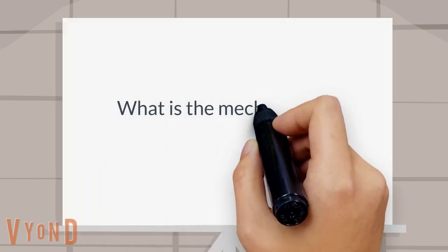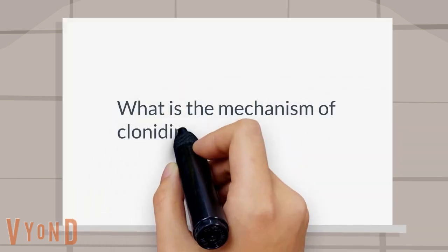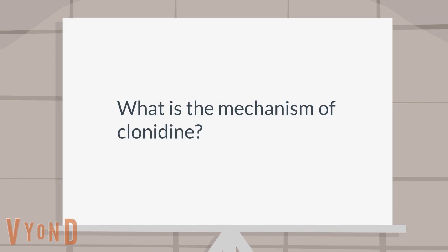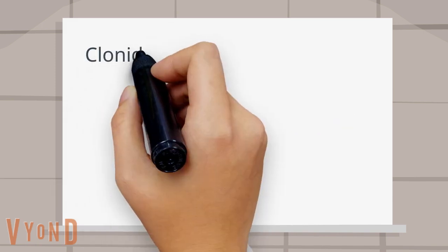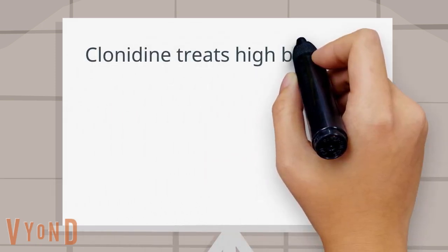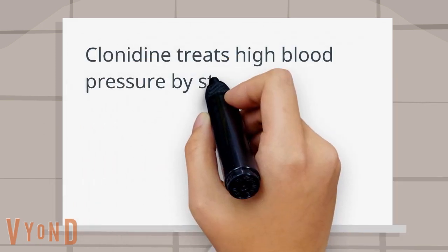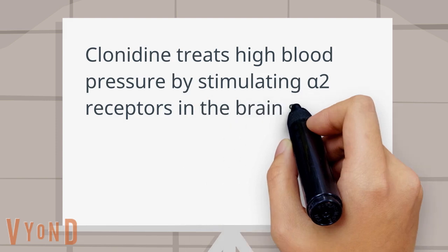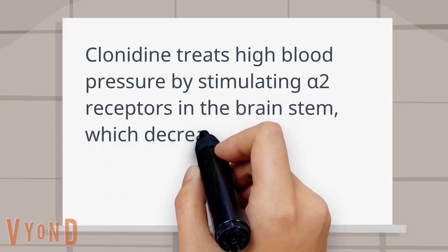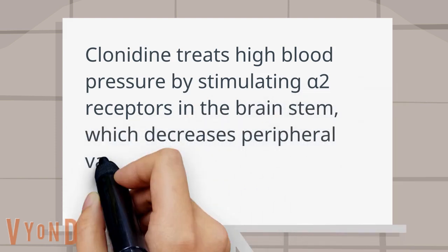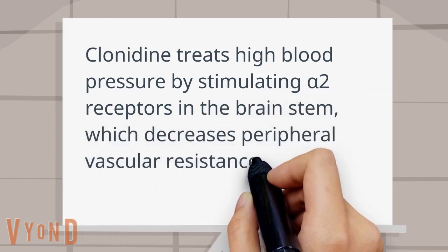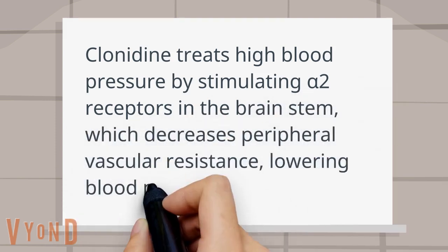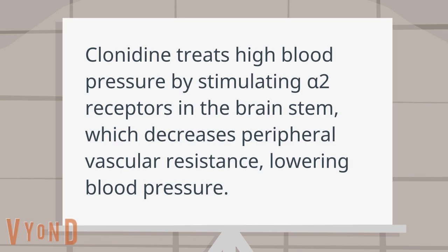What is the mechanism of clonidine? Clonidine treats high blood pressure by stimulating alpha-2 receptors in the brain stem, which decreases peripheral vascular resistance, lowering blood pressure.